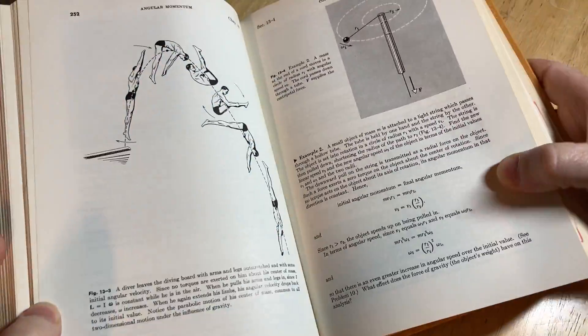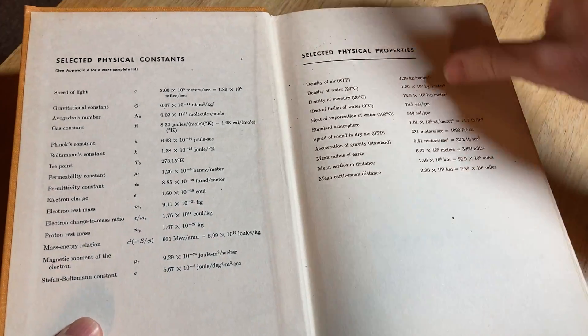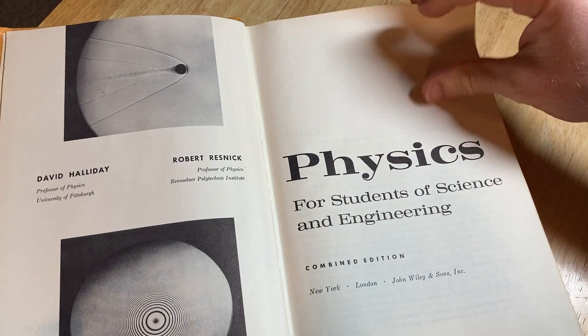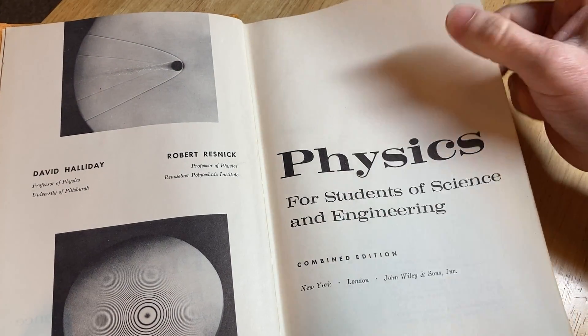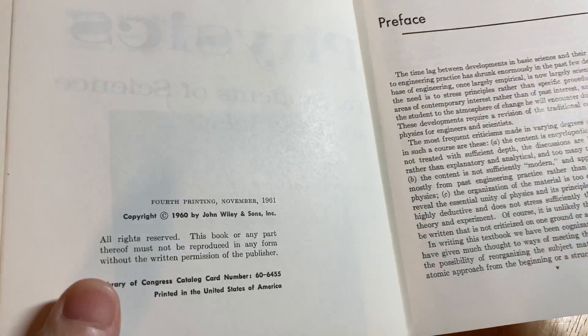Older book, really thick book. I'm gonna smell it here, just oh yeah, nice. Really thick binding. Let me show you what it contains. This has a ton of physics. This is the combined edition, 1960, fourth printing November 1961.